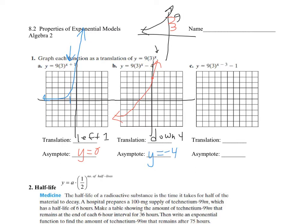And then what's happening in this graph is that I'm going right 3 and then down 1. So my asymptote is going to be y equals negative 1. So I'm going to move my function over, right 3, and then down 1.